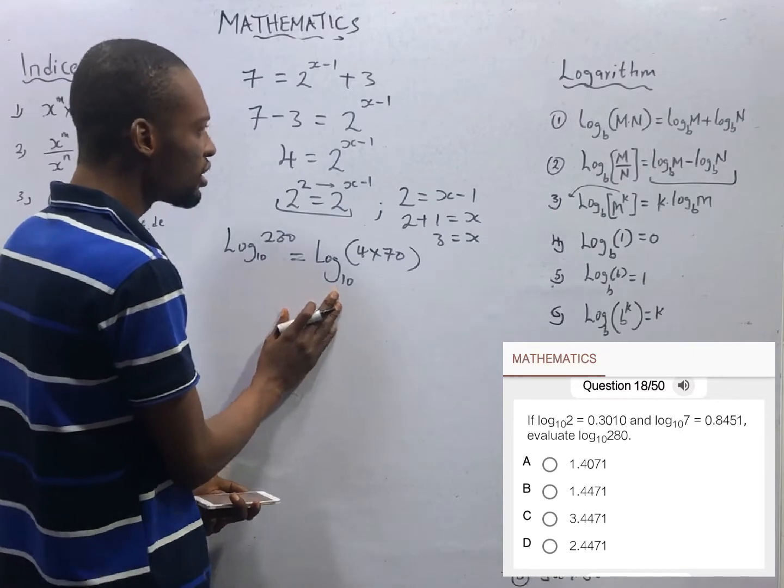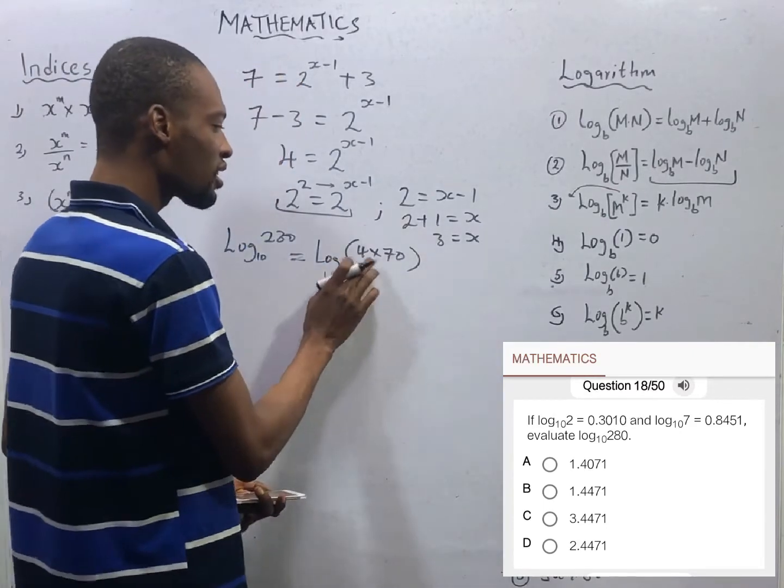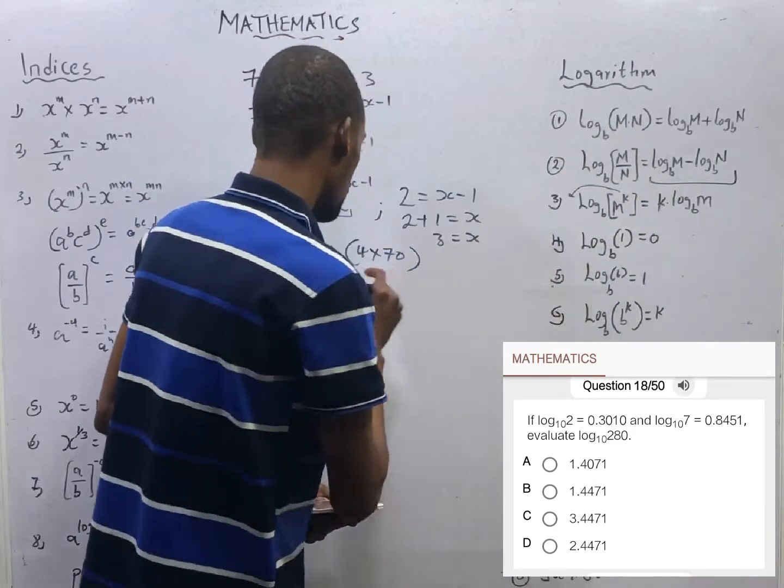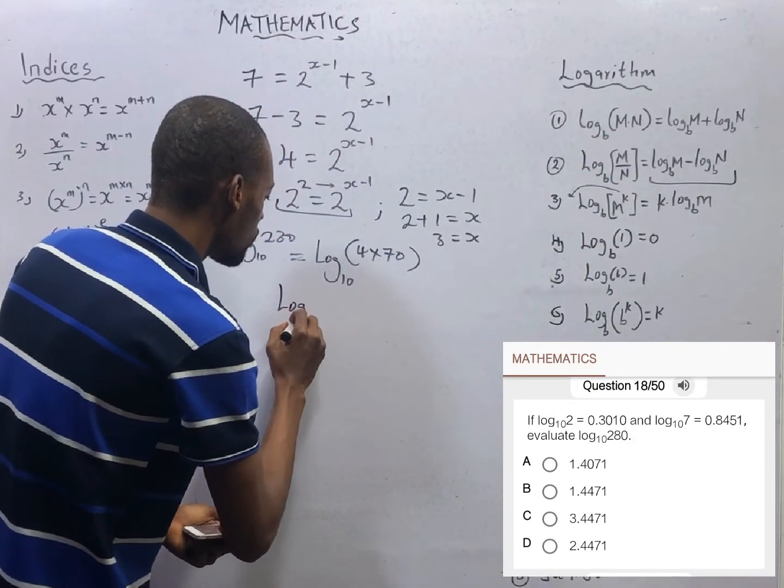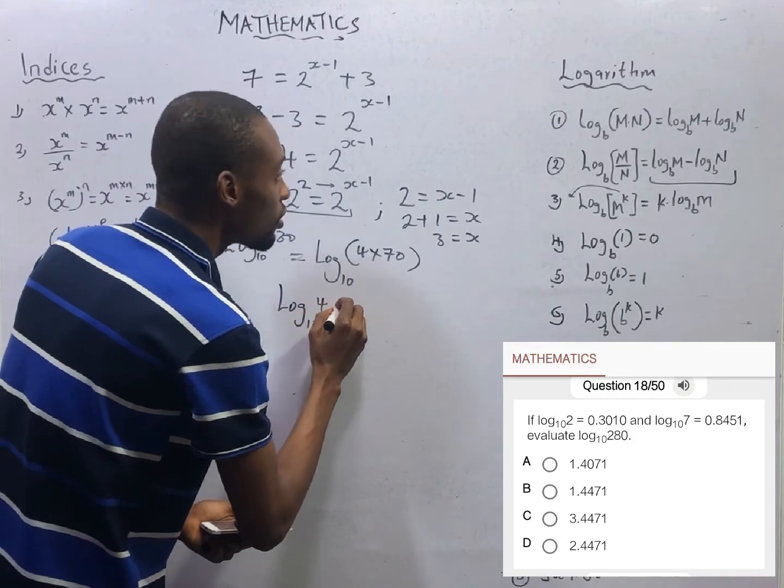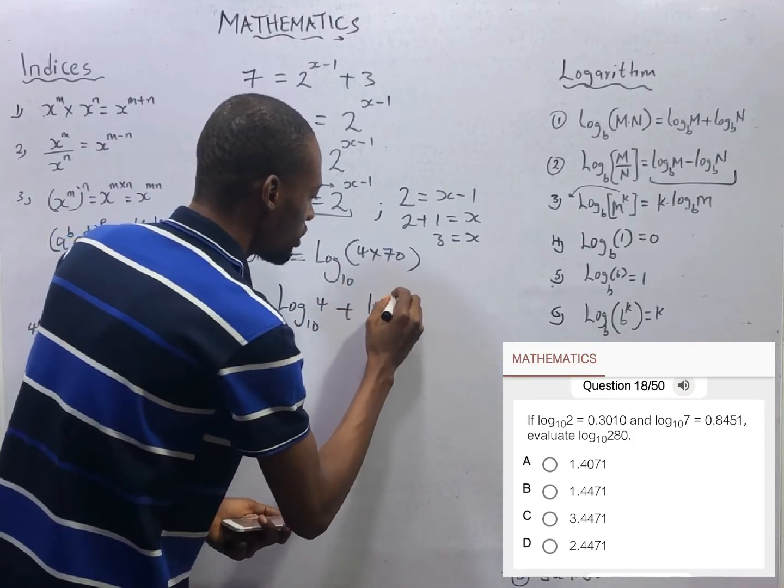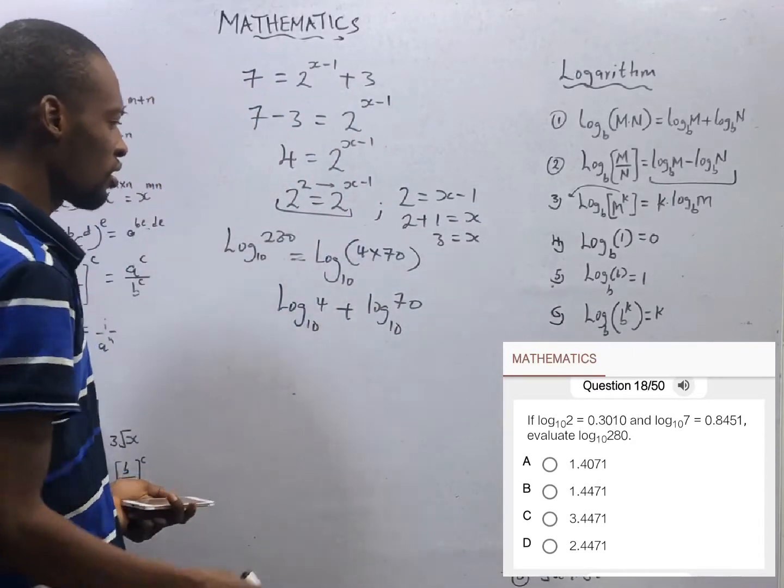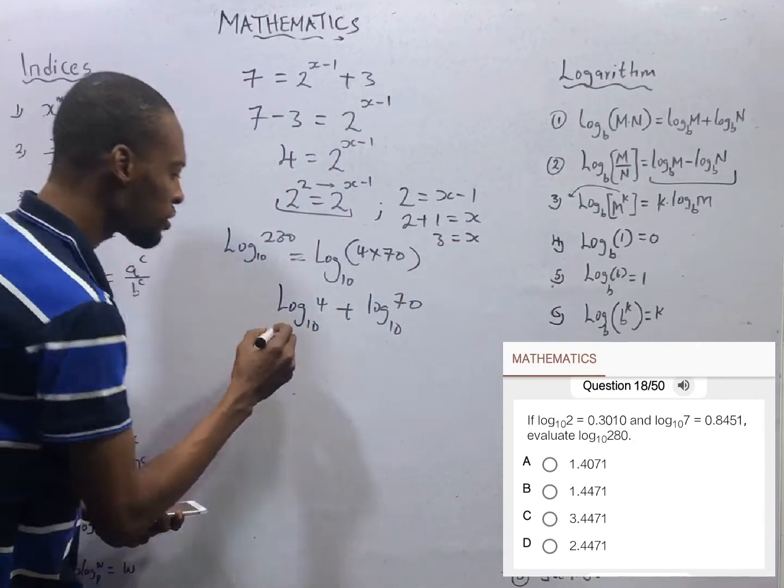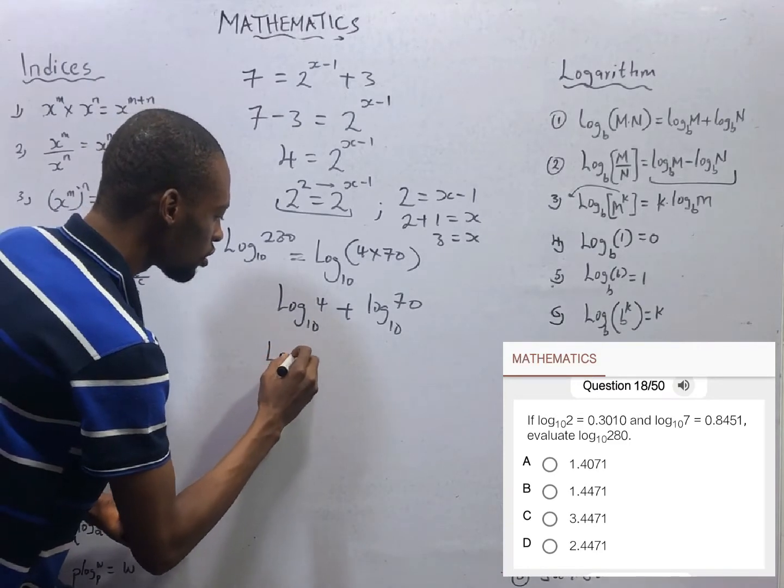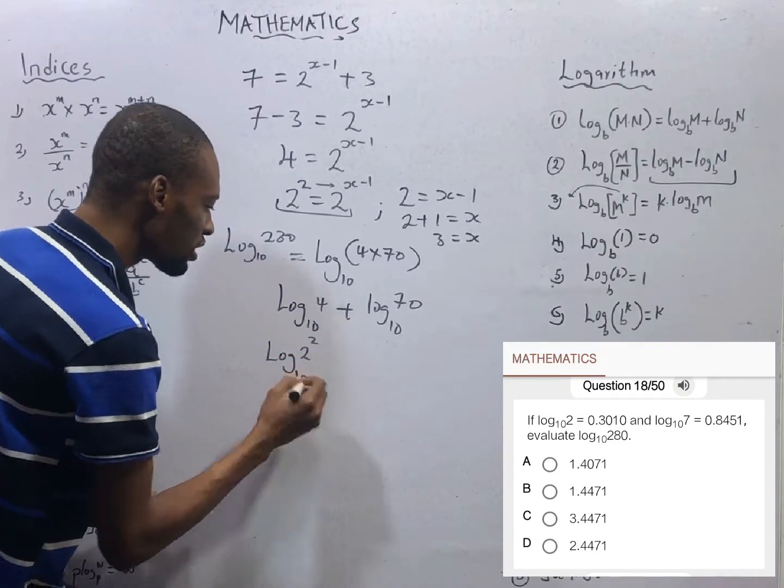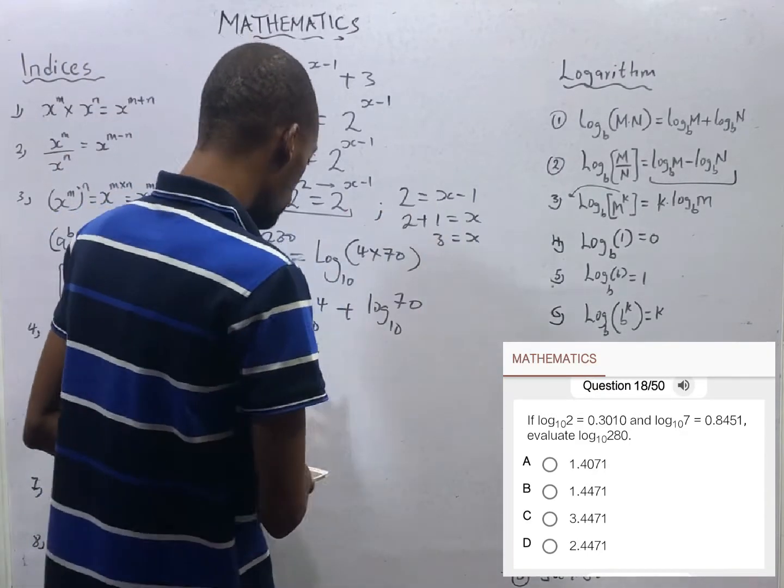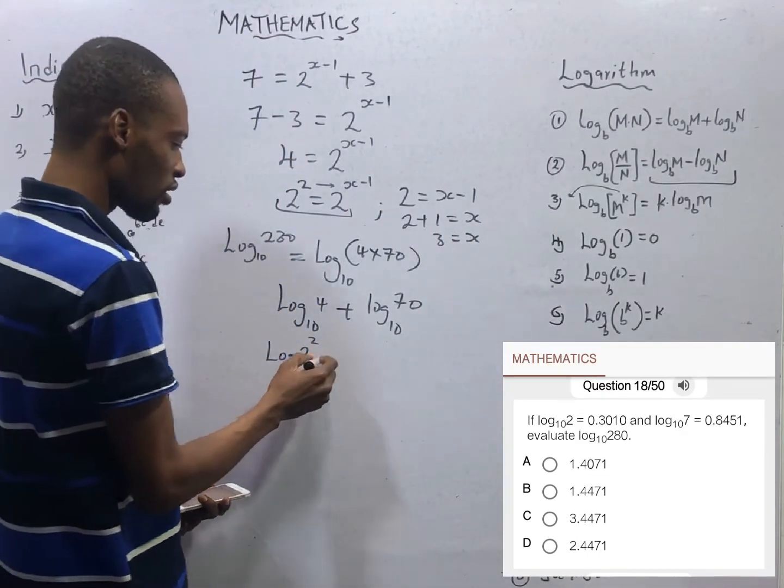From the law of logarithm, if you have log to base a times b, this is the same thing as log to base a of the first number plus log to base a of the second number. From here, this is the same thing as log 2 to the power of 2 with base 10. You can see that we've been able to bring out log 2 with base 10.